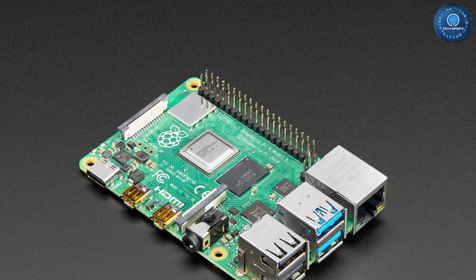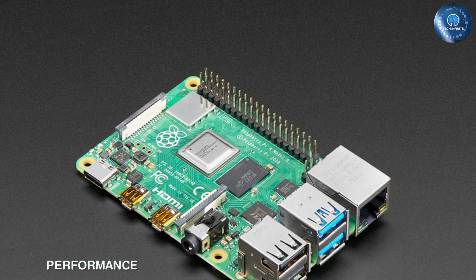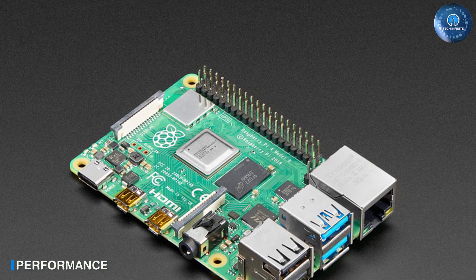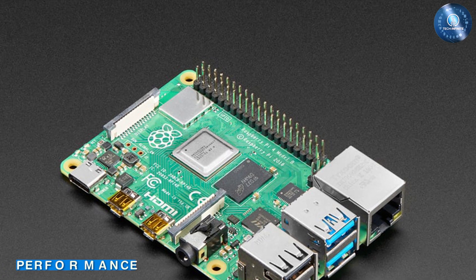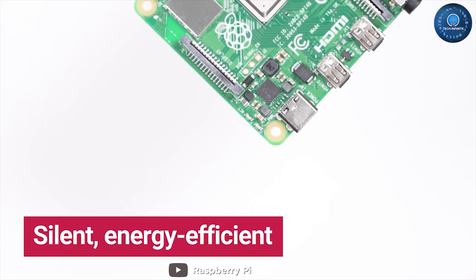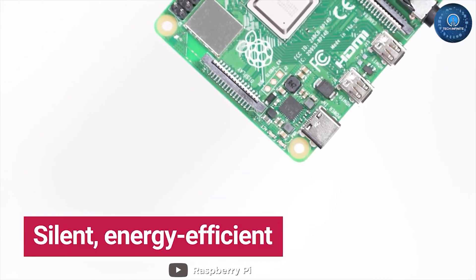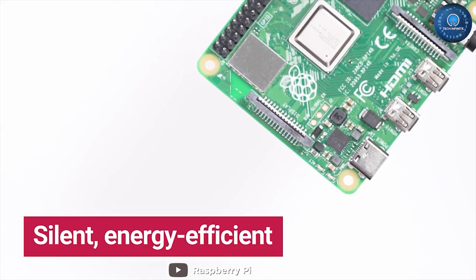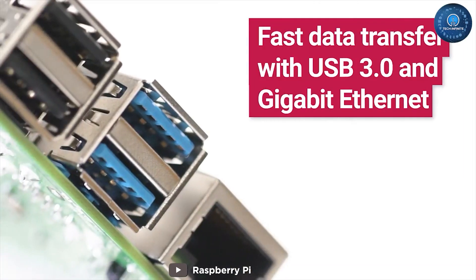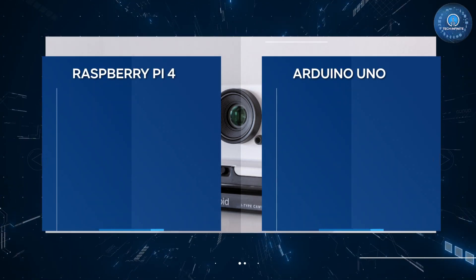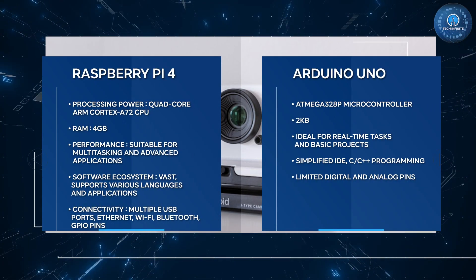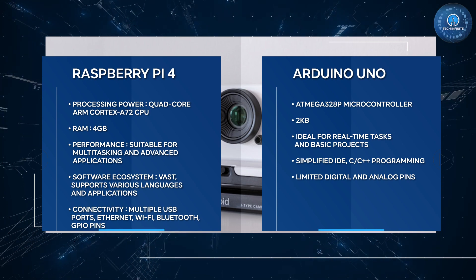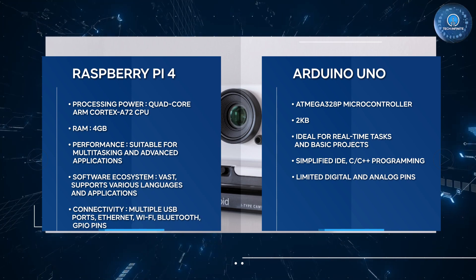When it comes to performance, the Raspberry Pi 4 undoubtedly takes the lead. Its powerful CPU and generous RAM make it suitable for multitasking and running resource-intensive applications. Whether you want to use it as a media center, a home automation hub, or a mini PC, the Pi 4 handles it with ease.